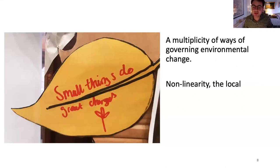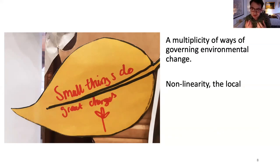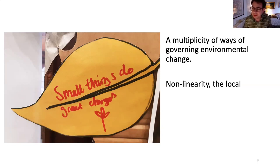Linking to what Noel was saying about the everyday — these things are very small potentially in scale but have large impacts. This idea of non-linearity or the local making bigger changes elsewhere is one way we have started to govern environmental change in schools. What logics do we use? That's another really interesting way of studying what's going on in schools.